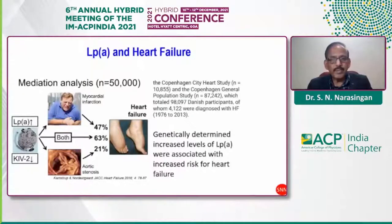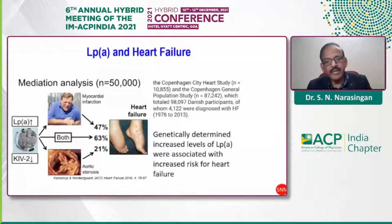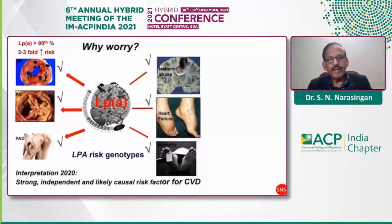Lipoprotein(a) is also probably responsible for increased incidence of heart failure — not only through myocardial infarction and aortic stenosis, but both problems can also be complicated with heart failure. Genetically determined increased levels of lipoprotein(a) were associated with increased risk of heart failure, identified in the DANMOG participants. Any level above the 90th percentile is associated with a two- to three-fold increased risk of myocardial infarction, peripheral arterial disease, and ischemic stroke, with heart failure as an additional complication.